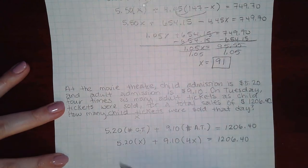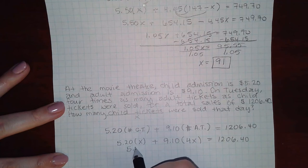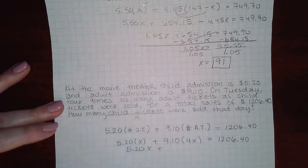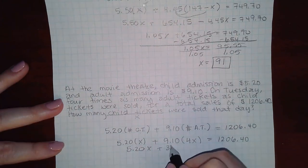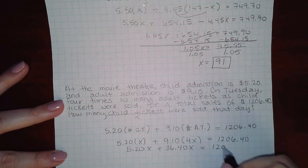So then if I multiply this out, I get 520X plus 36.40X. And if I combine my like terms.